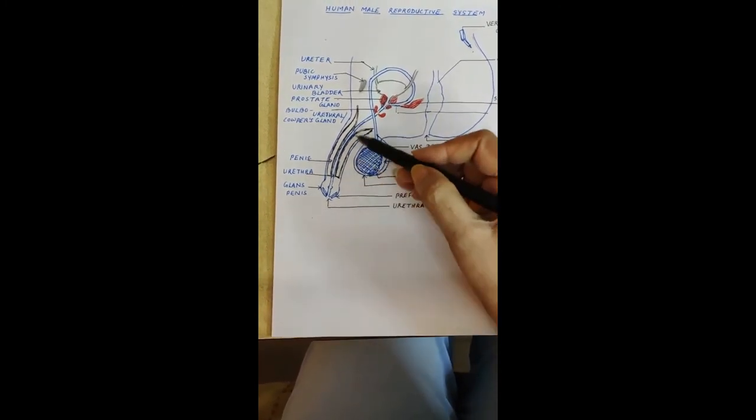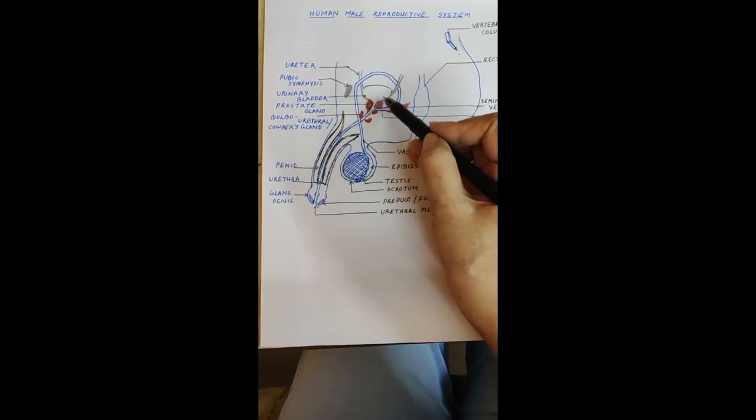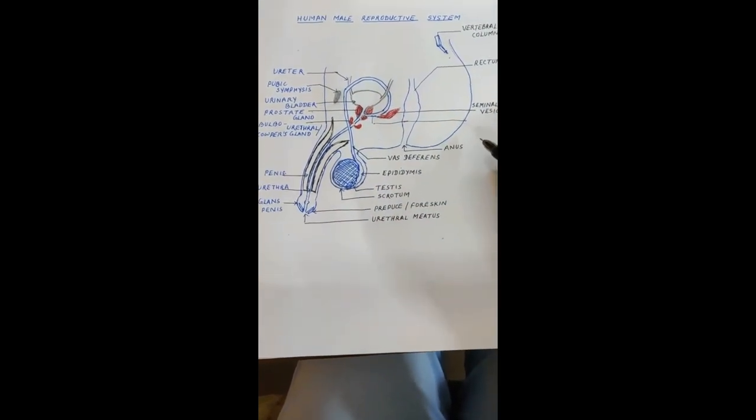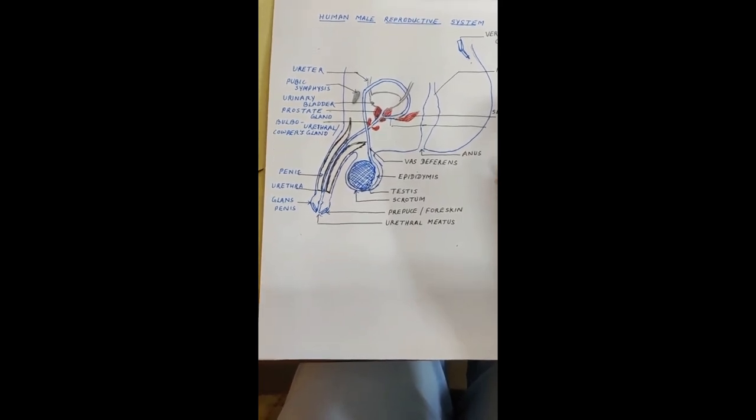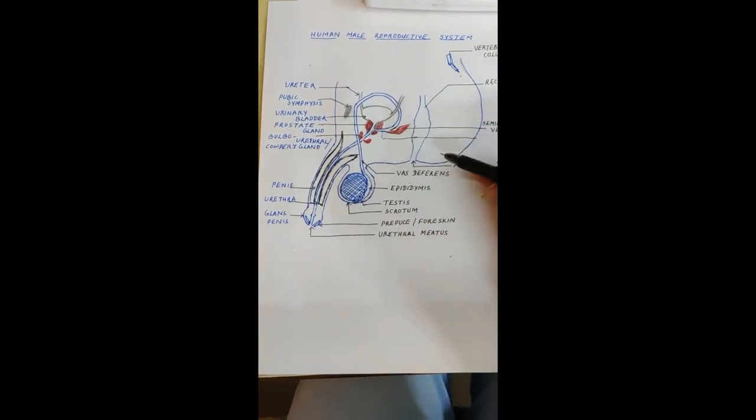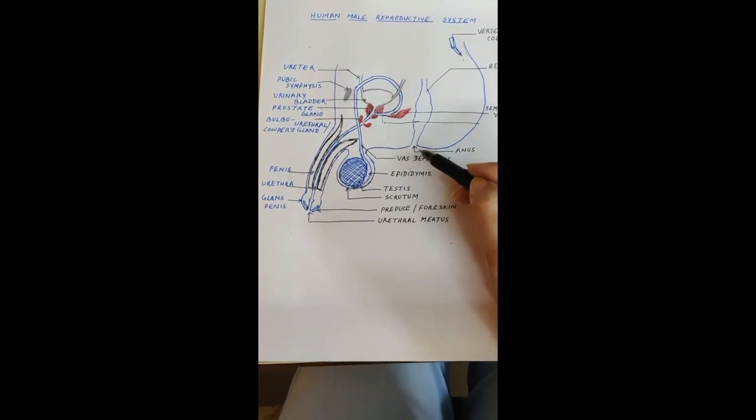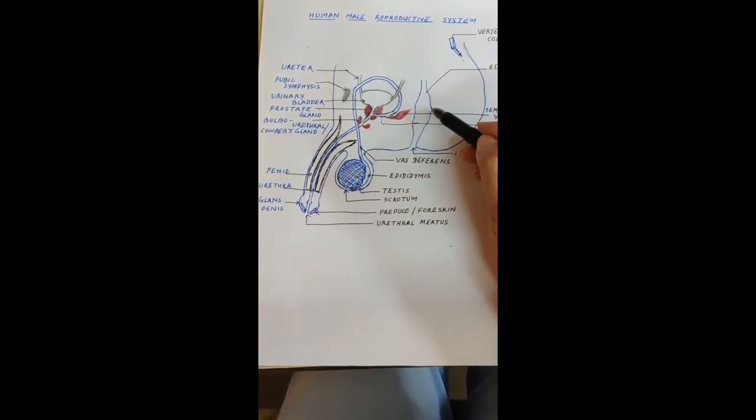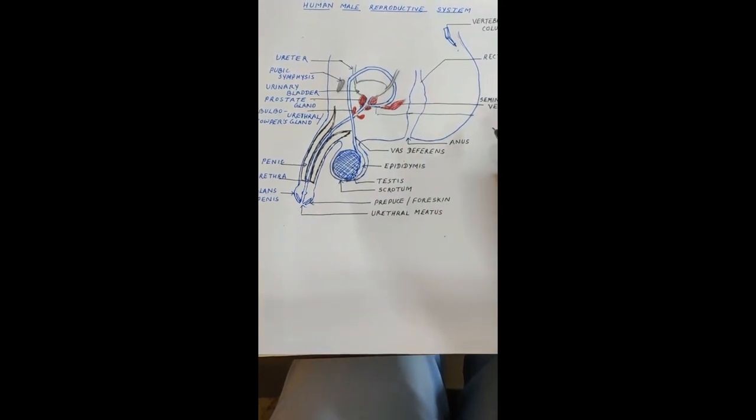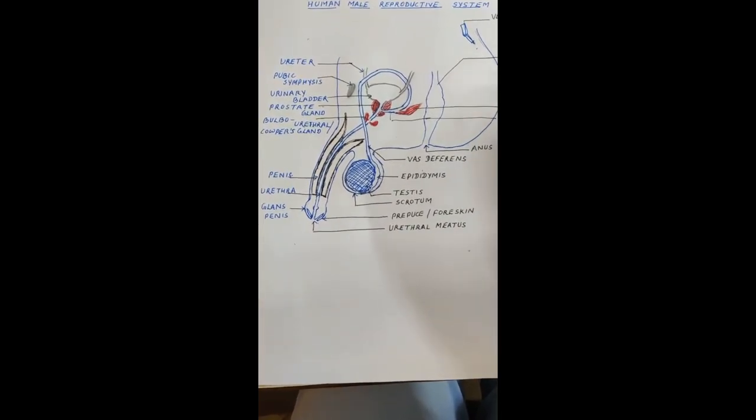While here the reference point for making the urinary bladder should be the pubic symphysis you should know that in human male the system is urinogenital the urinary system and the reproductive system have a common opening which is the urethra that is why the two systems are supposed to be combined and they are called urinogenital system. Now for reference you can also make the rectum which is right behind the urinary bladder and little above will be the vertebral column so this is how this diagram has been depicted even in your CBSE book so please follow all the orders and thank you.